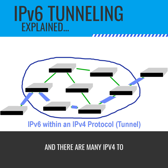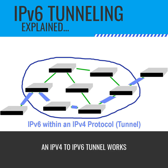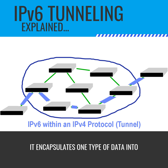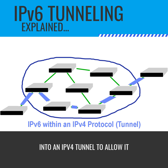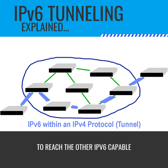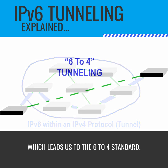There are many IPv4 to IPv6 standards that can be used. An IPv4 to IPv6 tunnel works like any other tunnel — it encapsulates one type of data into another. In our scenario, we want to encapsulate IPv6 traffic into an IPv4 tunnel to allow it to reach the other IPv6-capable router on the other end of the connection. Which leads us to the 6to4 standard.